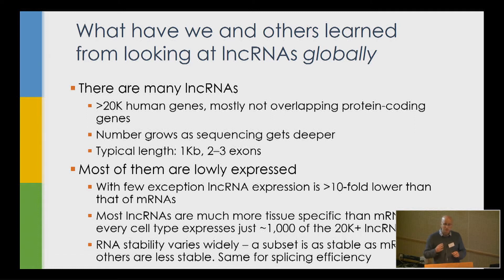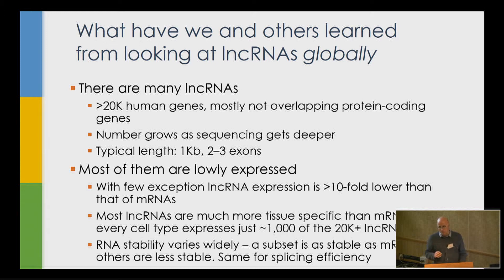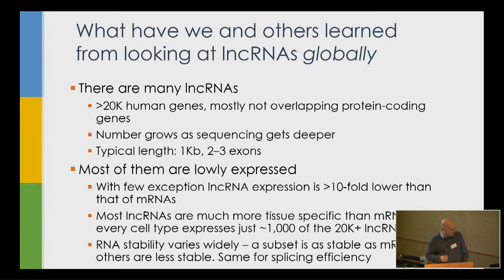In contrast to mRNAs, lncRNAs are much more tissue-specific. There are about 18,000–20,000 protein-coding genes, and a typical tissue expresses about half of them — roughly 9,000–10,000 proteins in any given tissue. For lncRNAs, again more than 20,000 genes, but any particular cell type typically expresses around 1,000 different lncRNAs at roughly one copy per cell — only about 5% of what is annotated. This is because, with some exceptions, many lncRNAs are very tissue-specific.